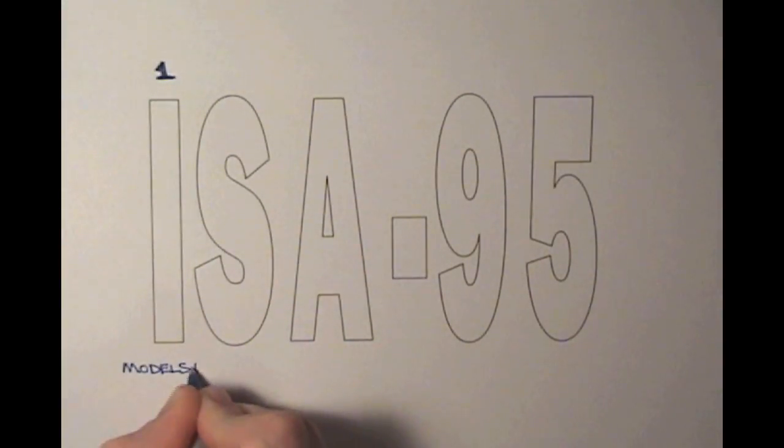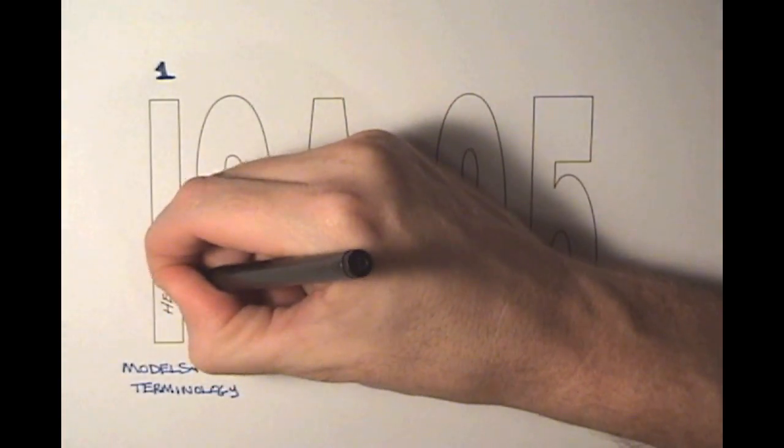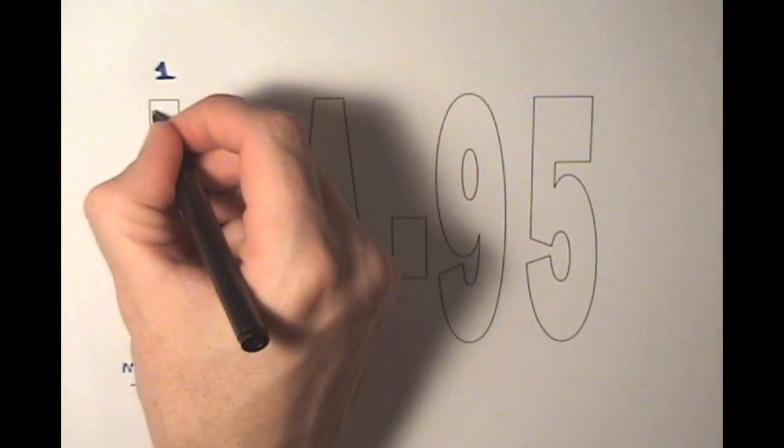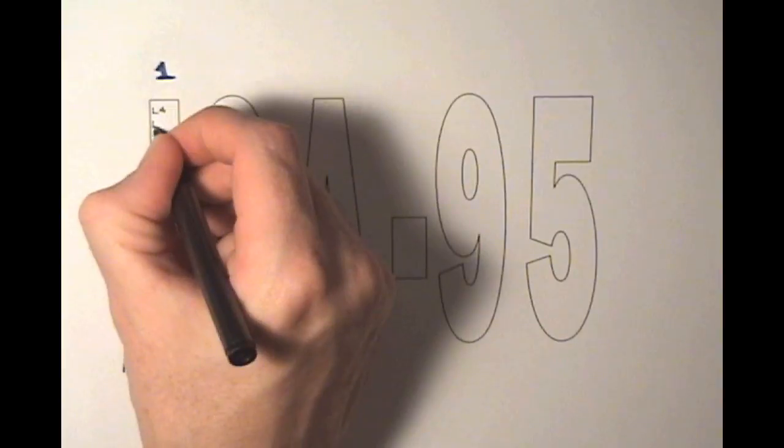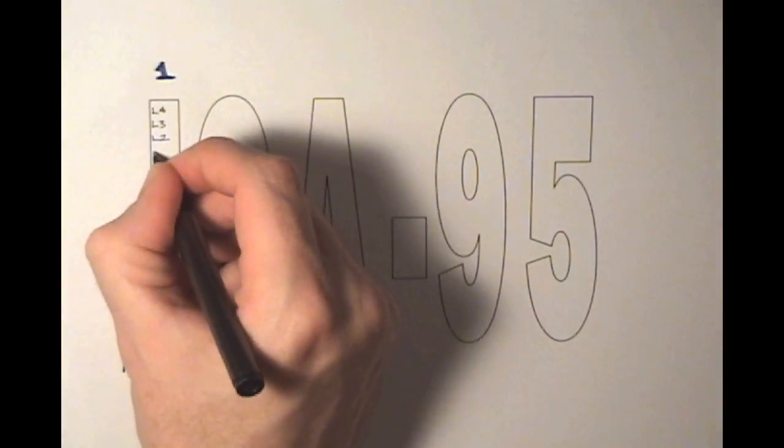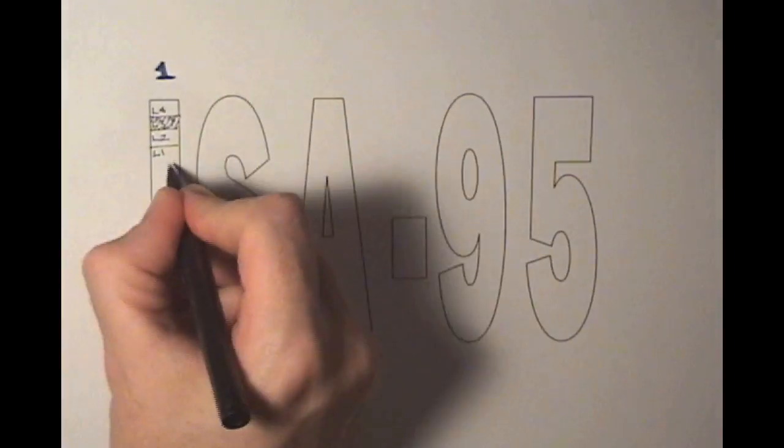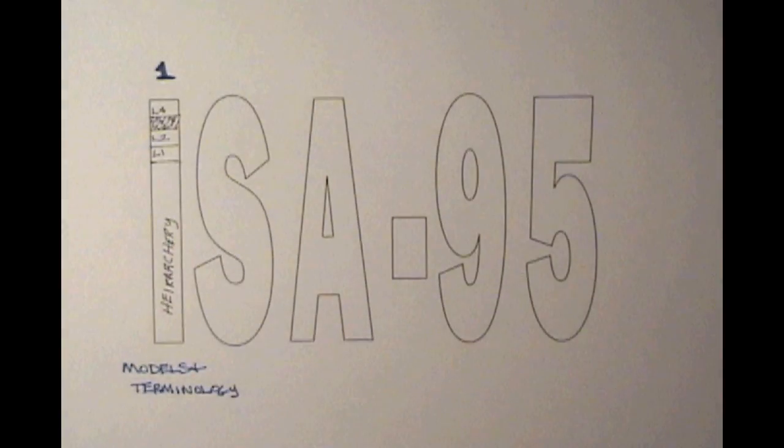It's a good place to start for a common set of terms that relate to the space between the enterprise and control domains. This includes the introduction of a hierarchy model. Levels 4 down to level 1 are introduced, with 4 being the enterprise, 1 and 2 being the control of the direct process, and level 3 being the interface between the ERP and the control domains. That's commonly referred to as the MOM or MES layer.